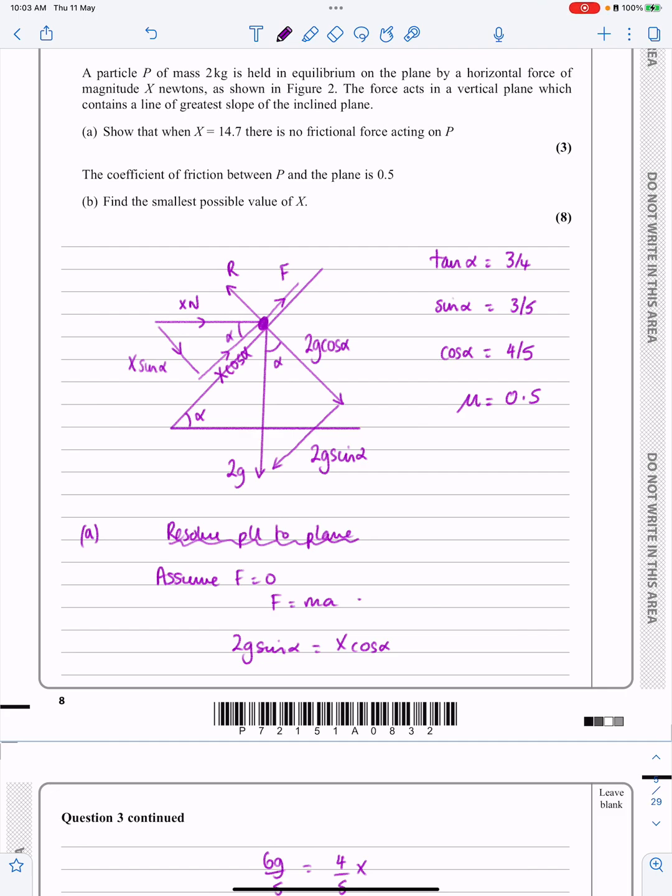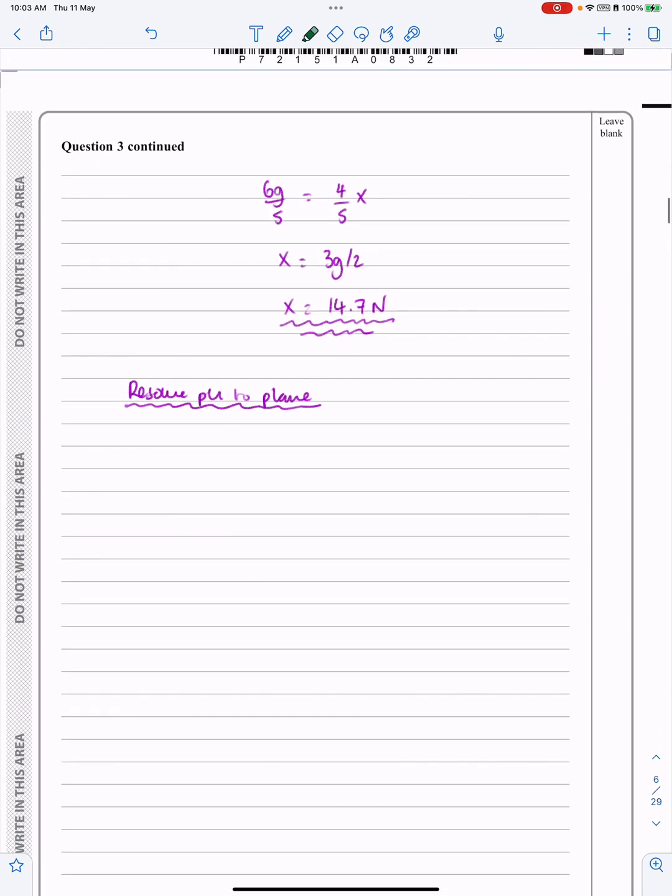The smallest value of X means that I'm just about holding P where it is, which means that if it was going to move, it would move down the plane. Friction opposes motion, so I've now got these directions for my forces. Really, really key—go back and rewind the video if you need to for that bit there.